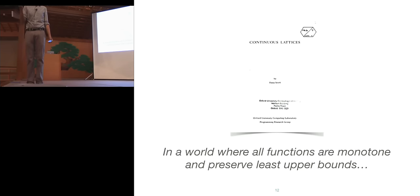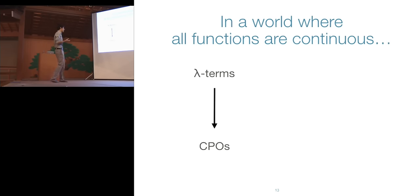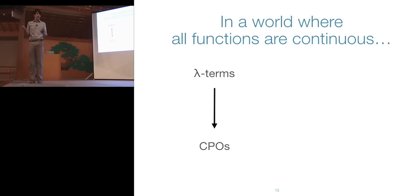What does being in a world where all functions are continuous give you? When you have a semantics of lambda calculus in CPOs, you're in a world where all functions are continuous. That means if you write down a lambda term, it gets interpreted as a function that has the property of being continuous — just by definition. You're in a world where everything is continuous, so if you write down a function you don't need to prove that it's continuous.